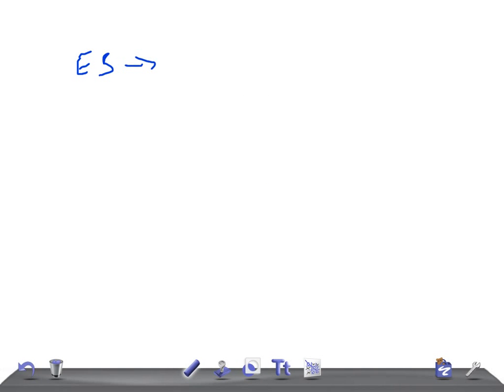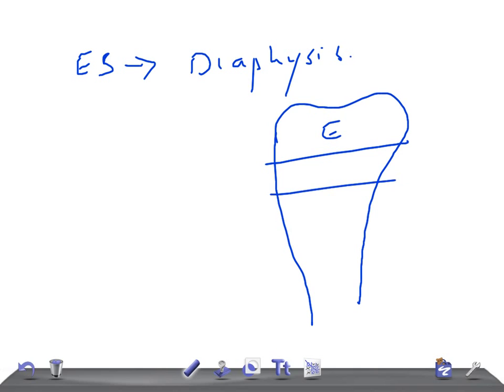You know epiphysis, metaphysis, and diaphysis. If this is epiphysis, this is metaphysis, and this is the diaphysis. It affects the diaphysis most commonly, but remember it can arise from anywhere. It doesn't mean it should arise only from the diaphysis.